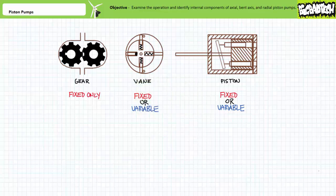Recall that three types of positive displacement pumps are commonly employed in hydraulic systems: gear pumps, vane pumps, and piston pumps. Pumps are mechanical power to fluid power converters. Pumps, regardless of their type, can be classified as fixed or variable displacement pumps.